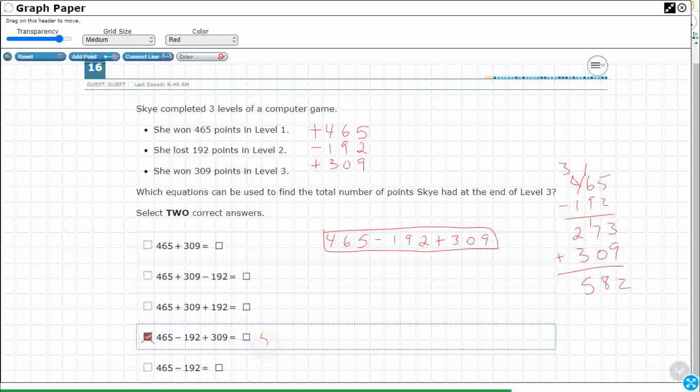So here's what I could do. I could just do all of these and see which one is going to be correct. But I can eliminate some of these because take a look at this first one, 465 plus 309. This completely ignores this minus 192. So I know that's not going to work.